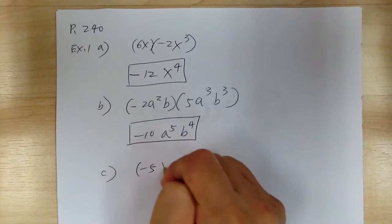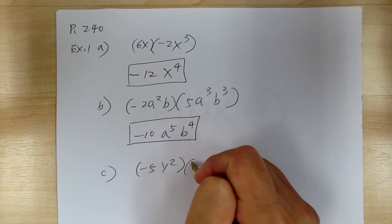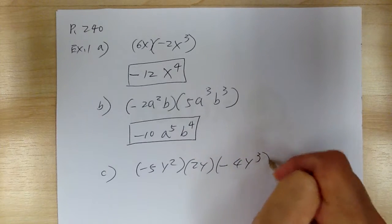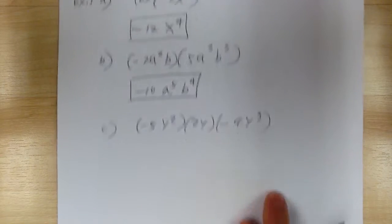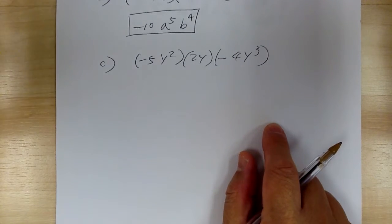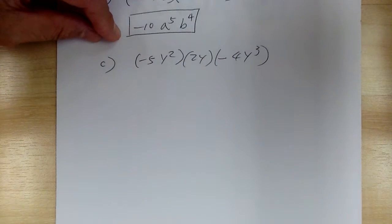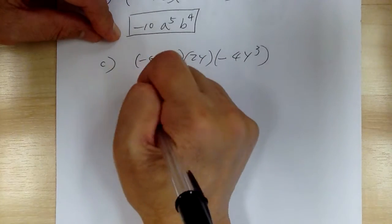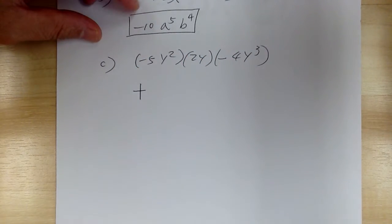You have negative 5y squared, 2y, and negative 4y cubed. So again, when there's a lot of stuff, you might want to go and start to do step by step. Let's take care of the sign. So you got negative, positive, negative. So it will give you positive, right? So take care of the sign.